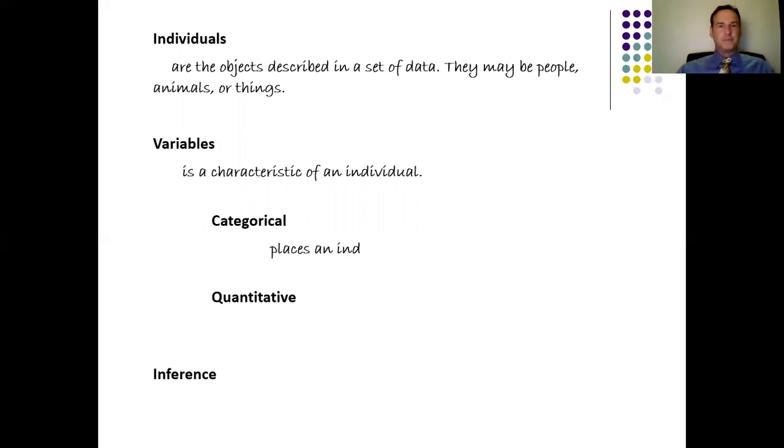And we describe these variables using one of two types of representations. One is categorical. In categorical variables, places an individual into one of several groups or categories. And there are ones that we usually describe using, I hate to say just words, but that's basically it.